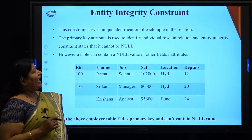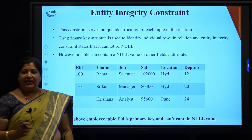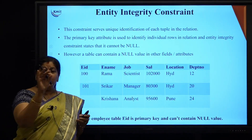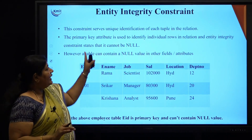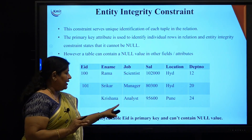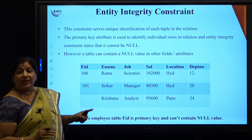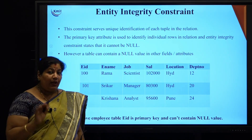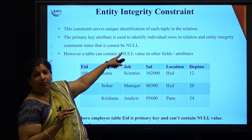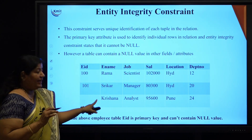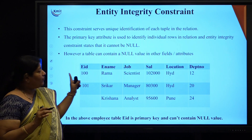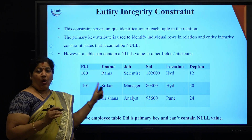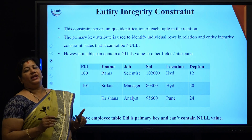Coming to entity integrity constraints, any entity — in order to maintain integrity, meaning uniquely identifying each tuple in that particular relation — we want to ensure that there is something called a primary key which cannot be null. That is very important: it cannot be null and it is capable of uniquely identifying each row or tuple in that particular relation.